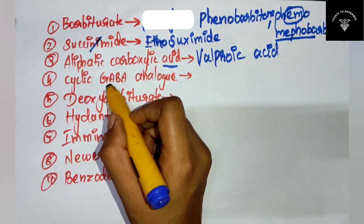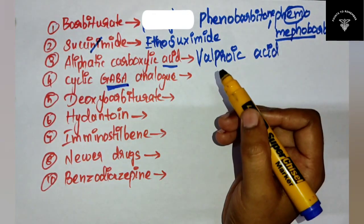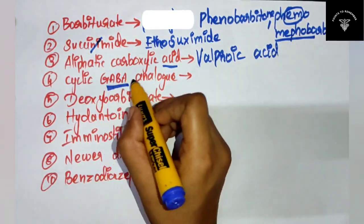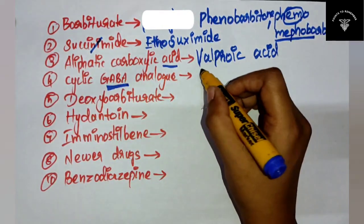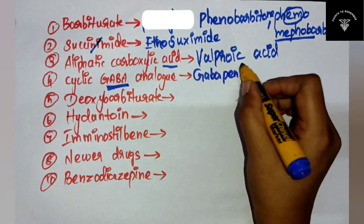The fourth one is cyclic GABA analog. Here you have GABA, so you can write it as gabapentin.